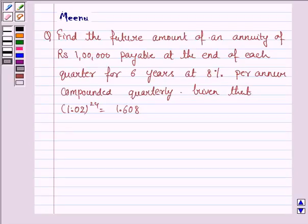Hello students, let's work out the following problem. Find the future amount of an annuity of Rs 1,00,000 payable at the end of each quarter for 6 years at 8% per annum compounded quarterly, given that (1.02)^24 = 1.608.